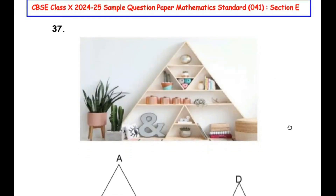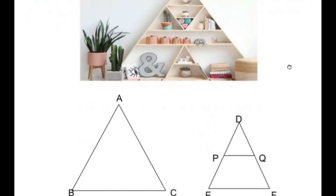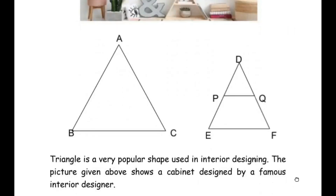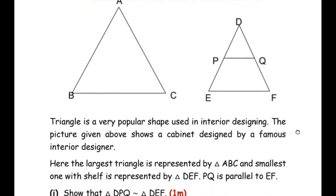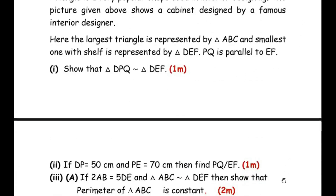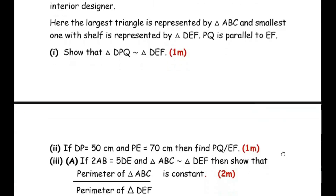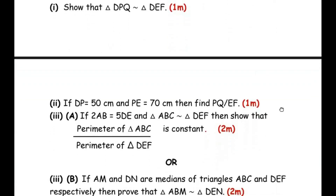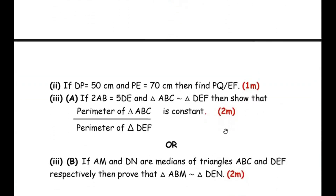This question has three sub-questions. The first sub-question is for one mark, the second sub-question is for one mark, and the third sub-question is for two marks and it has an OR question as well — that is, either you can attempt the A question or the B one. So let us start with the first question now.